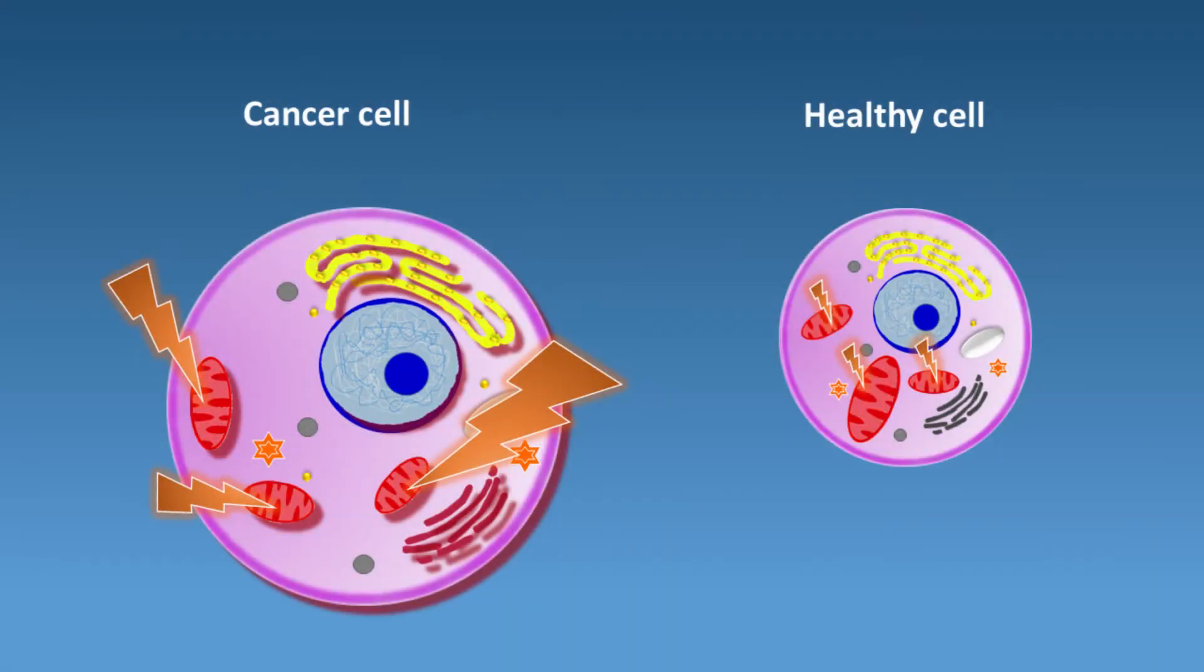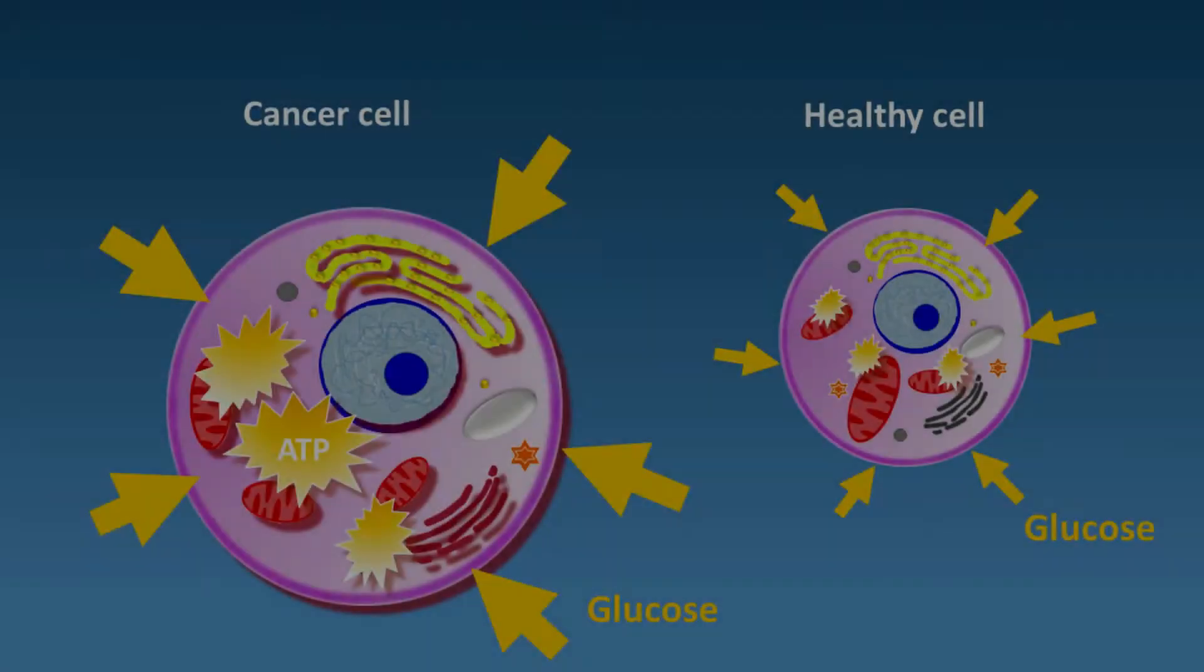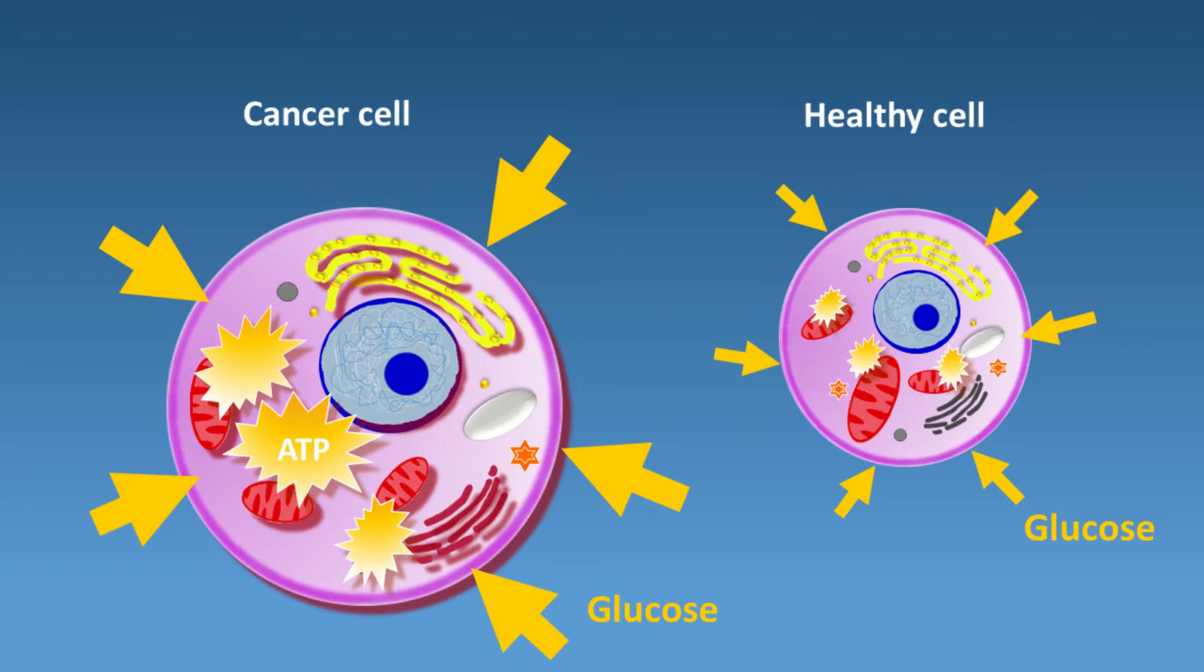This is where the mitochondria enter the chemotherapy picture. Mitochondria in cancer cells produce far more energy than their equivalents in a healthy cell. This means that a cancer cell needs a lot of energy as fuel for its mitochondria.